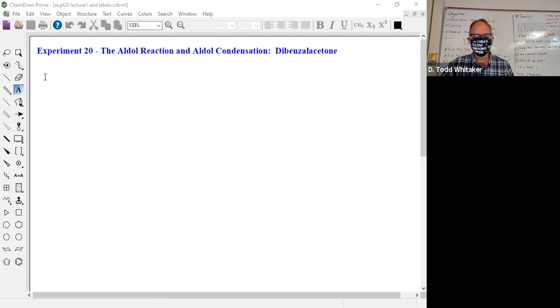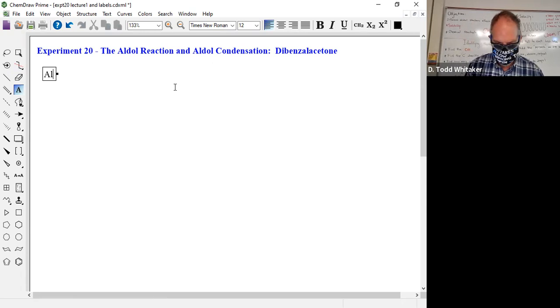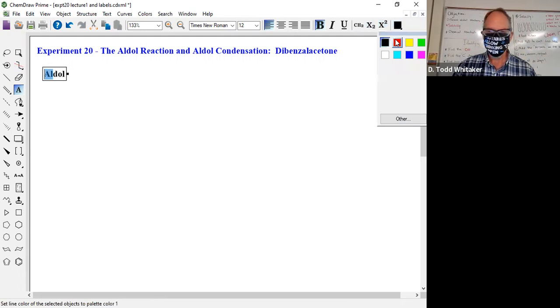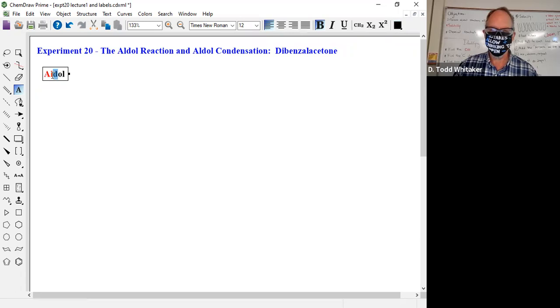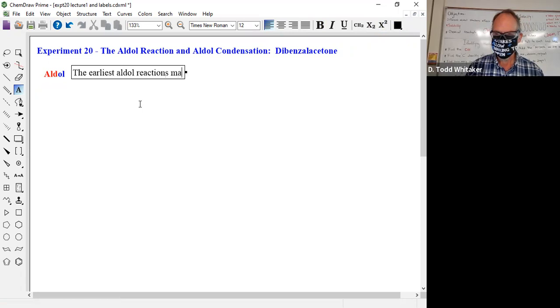But before we start, let's just look at aldol in general. It's one of the rare names that I actually like. Aldol, because it breaks down to things that are real. That right there, short for aldehyde, that right there. Aldehyde has a D in it, right? There we go. Alcohol. Aldol's got both. The earliest aldol reactions made products that had both aldehyde and alcohol moieties.